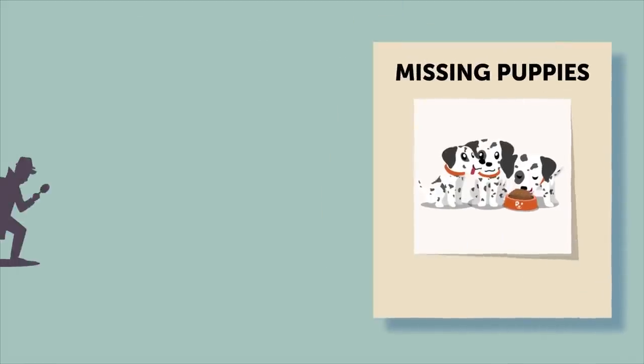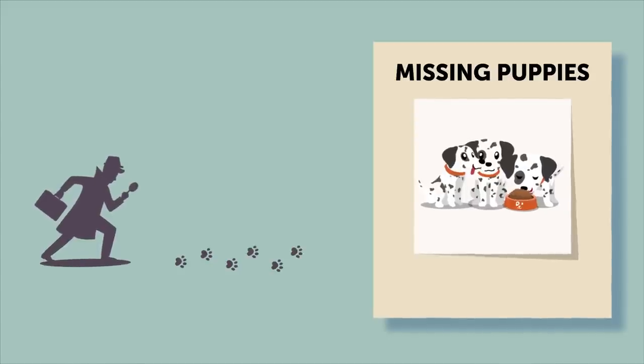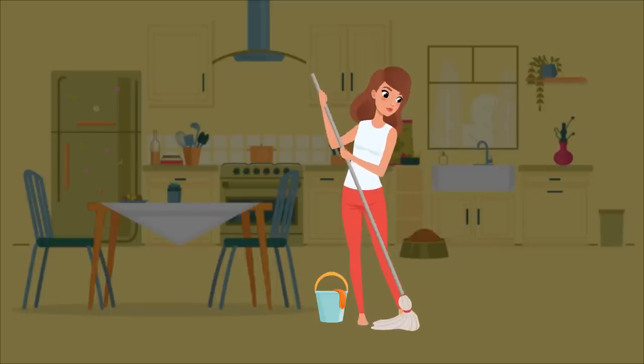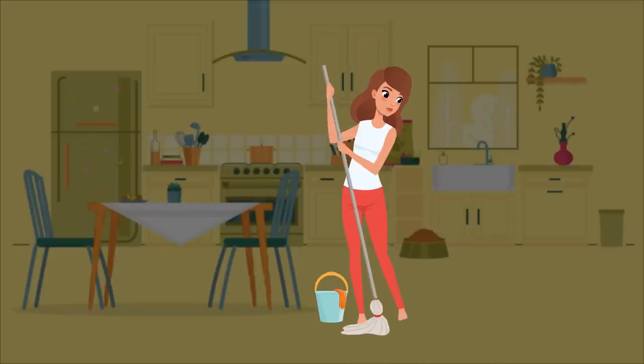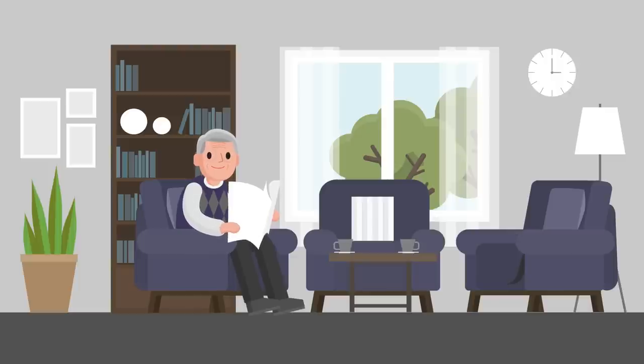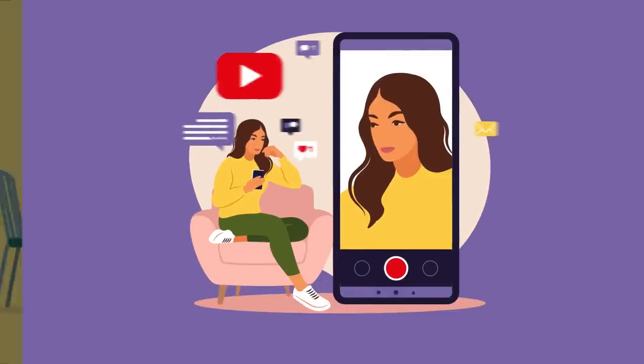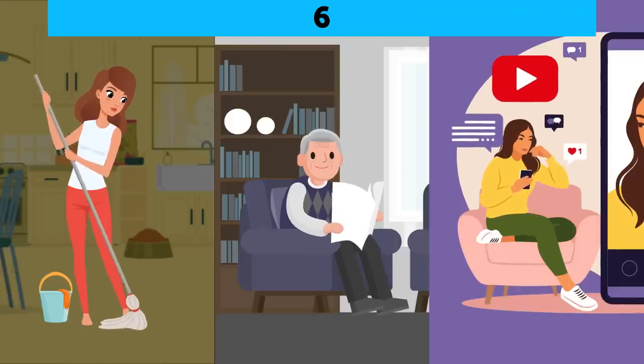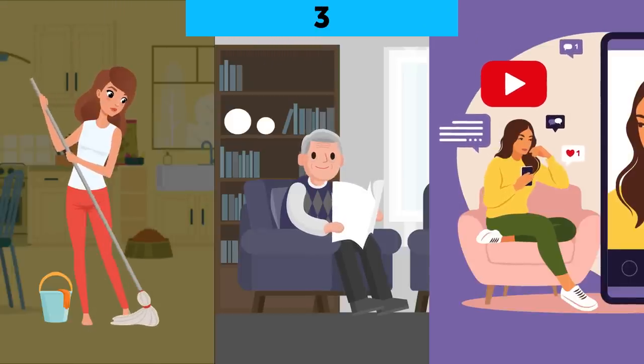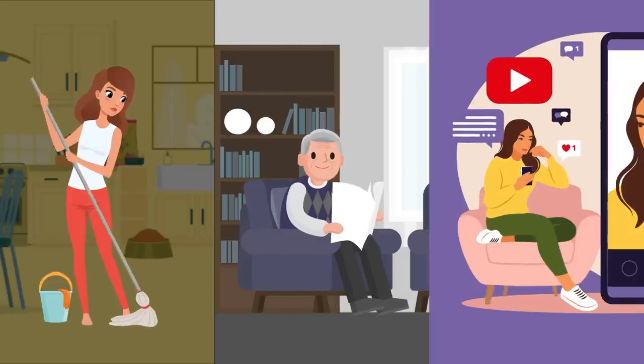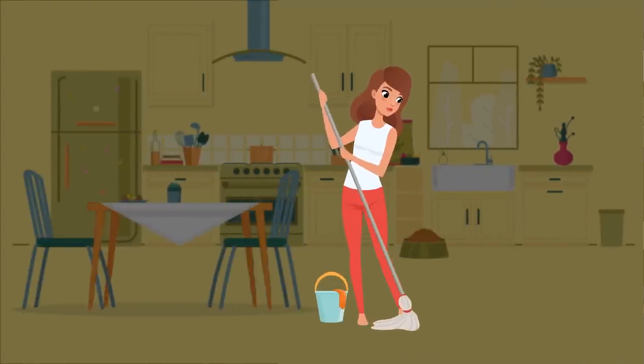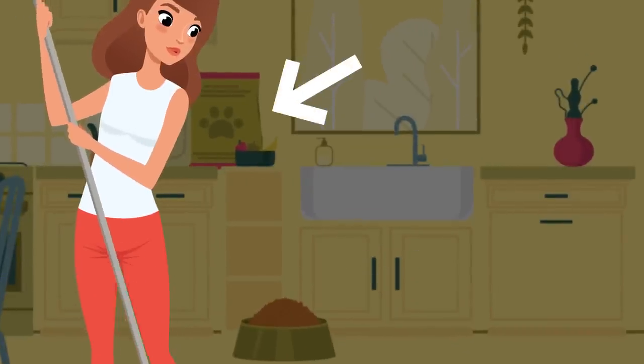Detective Anderson investigates the case of missing purebred puppies. He has a list of three suspects. The first suspect is a young girl who says she spent the previous day with her friends and she's also allergic to dogs. The second suspect is an elderly man who says he hasn't left the house for the last few days. The third one is a famous video blogger who says she was making YouTube videos all day. Which of them is lying? The first girl. She says she's allergic to dogs, but there's a bowl and some dog food in her kitchen.